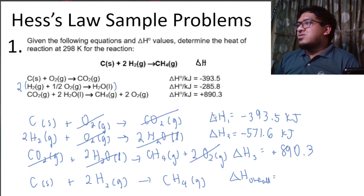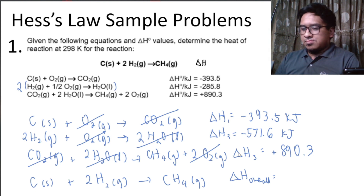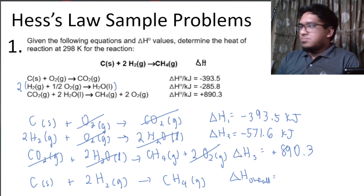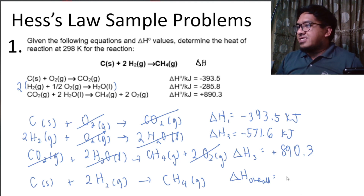So delta H₁ plus delta H₂ plus delta H₃ gives us the overall heat of reaction. Adding the values: negative 393.5 plus negative 571.6 plus positive 890.3 kilojoules gives us the final answer.